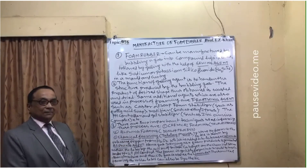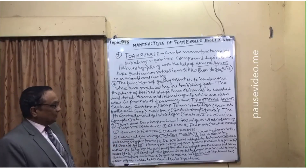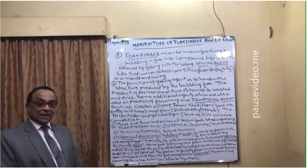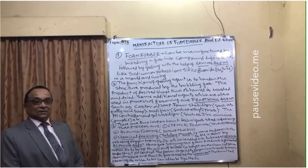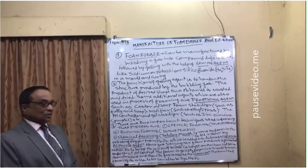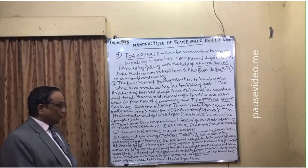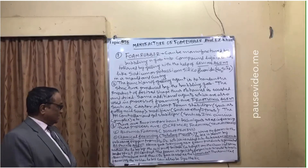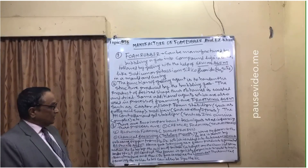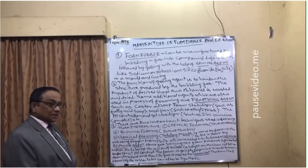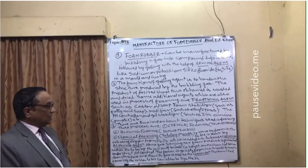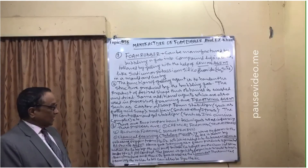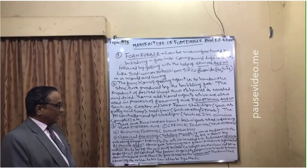In the Talalay process, foam in the latex is blown by releasing oxygen from hydrogen peroxide (H2O2), which is added into latex as a chemical blowing agent. The gas serving as a foam producer is generated within the latex by the action of a suitable catalyst under strict pH control. The foam is then quickly frozen in a mold to maintain its structure, and carbon dioxide gas is used as the coagulant.